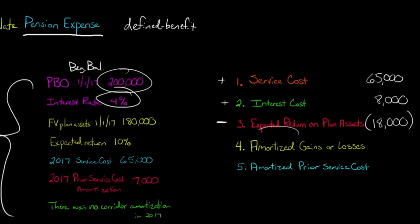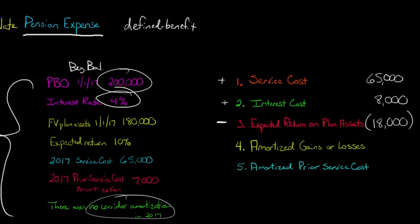The fourth component is amortized gains or losses. When there's a significant difference between expected and actual return on plan assets and it gets outside the corridor, we may have to amortize some of those gains or losses. In this example, we'll assume there was no corridor amortization in 2017 — we'll cover that in a future video — so we put zero here.